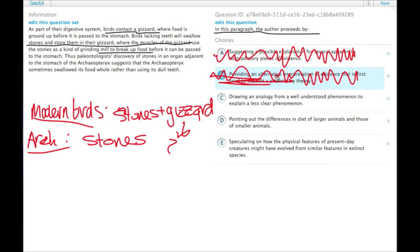So there's no alternate. C: drawing an analogy from a well-understood phenomenon to explain a less clear phenomenon. Well, this sounds likely. We understand how bird gizzards work with the stones and grinding up the food and whatnot. And drawing an analogy to modern birds, we are trying to understand this discovery of stones in an organ adjacent to the stomach by analogy to a modern animal.